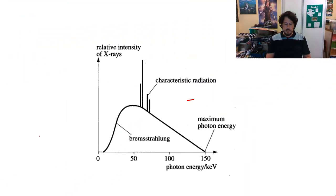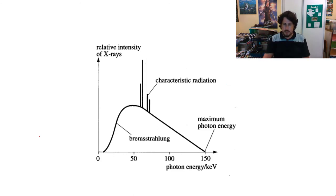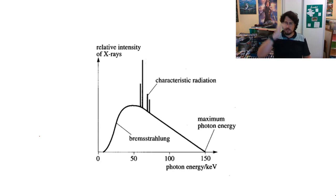Those characteristic peaks align with the electron orbitals specific to the target element. If you were to change the element that is the target — the type of metal — then you would change the location of the characteristic radiation peaks, because the orbitals have changed and therefore the energy levels have changed. The key thing is: with any X-ray graph, the characteristic radiation peaks will always stay in the same location when it is the same target metal. I'm going to go into how the intensity and the maximum frequency changes in the next few videos.